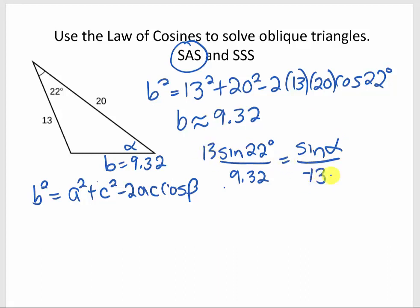So I could put the 13 over here and grab my calculator and do inverse sine of 13 sine 22 divided by 9.32, and it looks like alpha is going to be 31.5 degrees, that's rounded to one decimal place.